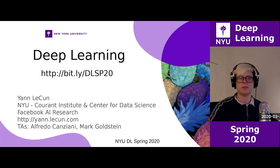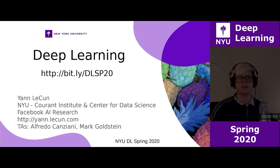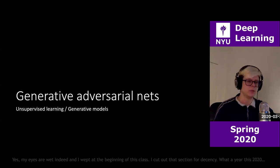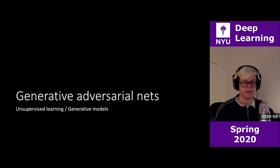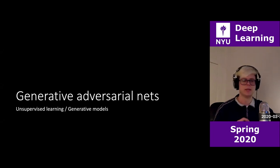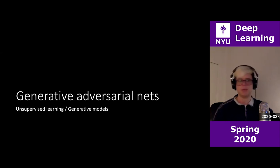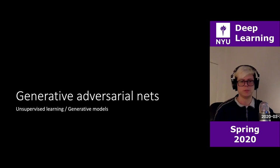Today we're going to be talking about generative adversarial networks and how to properly make them. Generative adversarial networks fall under unsupervised learning and generative models. Generative models allow you to get something that is in the input space. Most of the time, we assume there is a probability distribution over these samples. We are in the realm of unsupervised learning where we don't have labels.